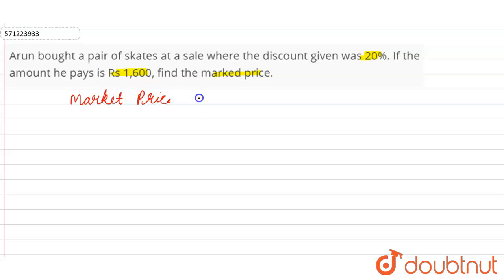Let the market price be rupees x. So market price is rupees x. Now discount, whenever we want to find the value of discount, we always subtract the amount that we pay from the market price. So discount is equal to market price minus the selling price. Market price minus the selling price. So market price we have is x and selling price is 1600.